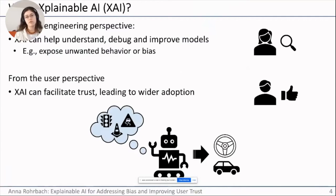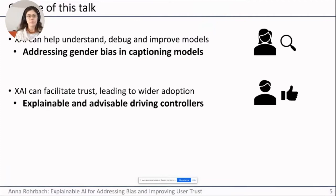From the engineering perspective, XAI can help us better understand, debug, and improve our models. As developers, we would like to understand if a model has any unwanted behaviors or biases before we deploy it, so that we have a chance to correct it. From the user perspective, XAI can facilitate trust and improve user experience overall, leading to wider adoption — for example in tools such as self-driving vehicles.